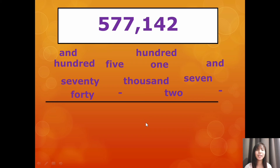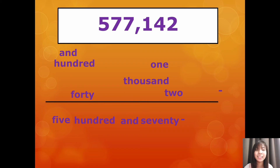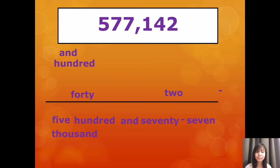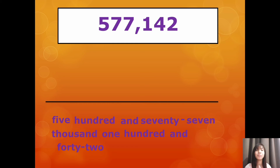So, let's get started. First is five, hundred, and, seventy — then the dash symbol — seventy-seven, thousand, one, hundred, and, forty — then the dash symbol — two. Let's read: five hundred and seventy-seven thousand, one hundred and forty-two.